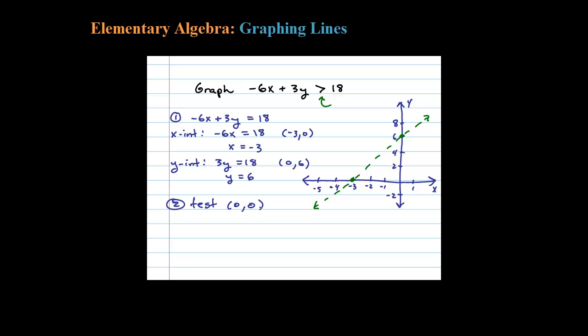It's always easiest to test the origin, so let's test 0 comma 0 and see if it solves the original inequality. Does negative 6 times 0 plus 3 times 0 come out greater than 18? This gives us 0 — is 0 greater than 18? The answer is false. 0 is not greater than 18; 0 is less than 18. So the origin is not part of the solution set.